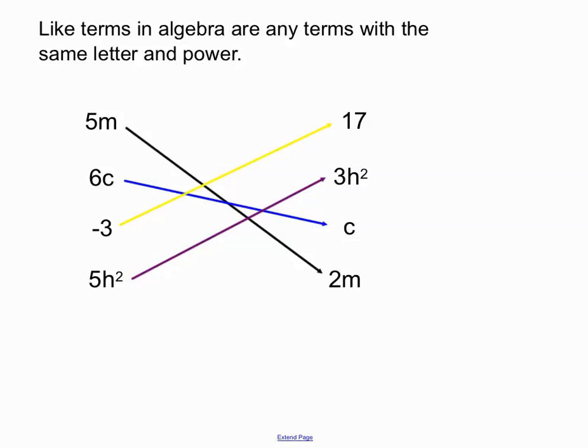And we have both h squared terms here. 5h squared and 3h squared. They would be classed as like terms. So we'll have a good look in the following videos about the importance of like terms and how we use them.